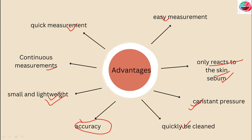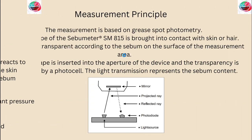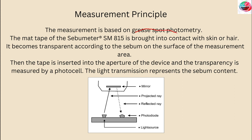What is the measurement principle? The measurement is based on grease spot photometry. The matte tape of the sebumeter S5 is brought into contact with the skin or hair. It becomes transparent according to the sebum on the surface of the measurement area. Then the tape is inserted into the aperture of the device and transparency is measured by a photocell. The light transmission represents the sebum content.